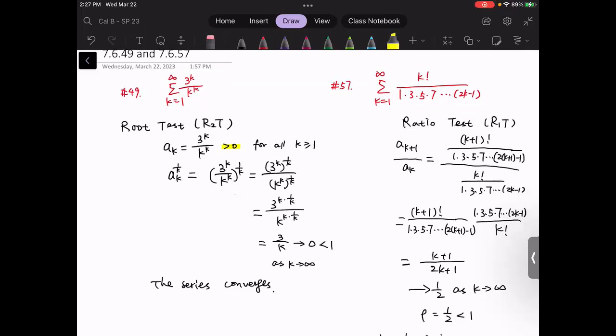a_k is a positive term for all k values. Now for the 1 over k power, we can separate those, and then with some algebra...